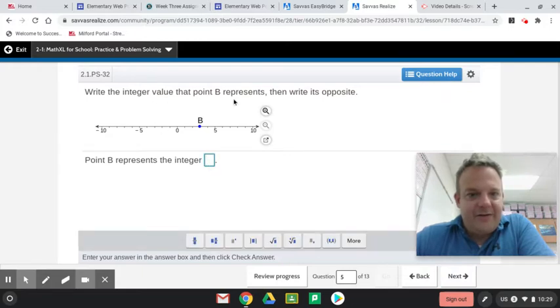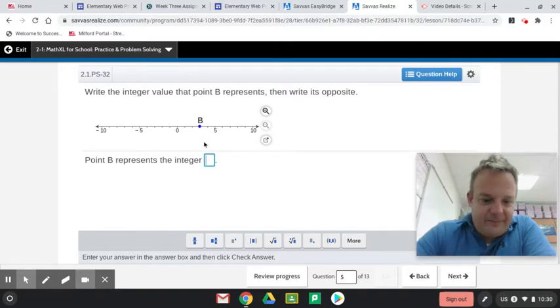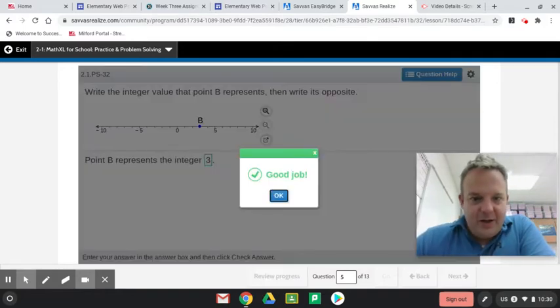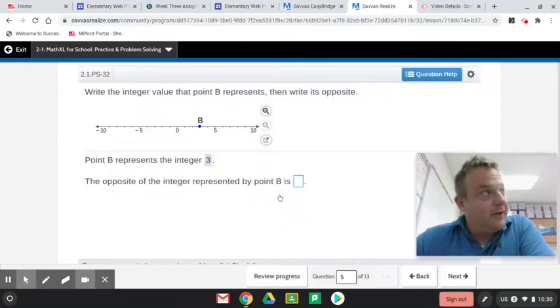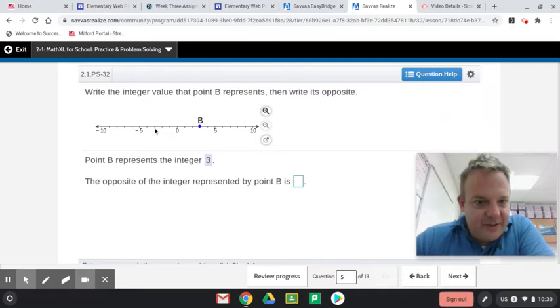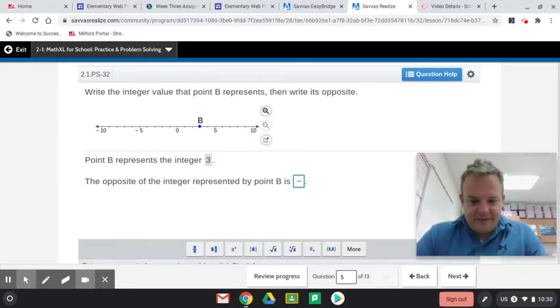You thought zero was the smallest, right? But it goes smaller. Write the integer value that point B represents, then write its opposite. So point B represents 1, 2, 3. And then the opposite would be negative 3. And I'll give you a nice little tip. The distance from zero is called the absolute value. So here's the opposite here. And the absolute value of negative 3 is 3.